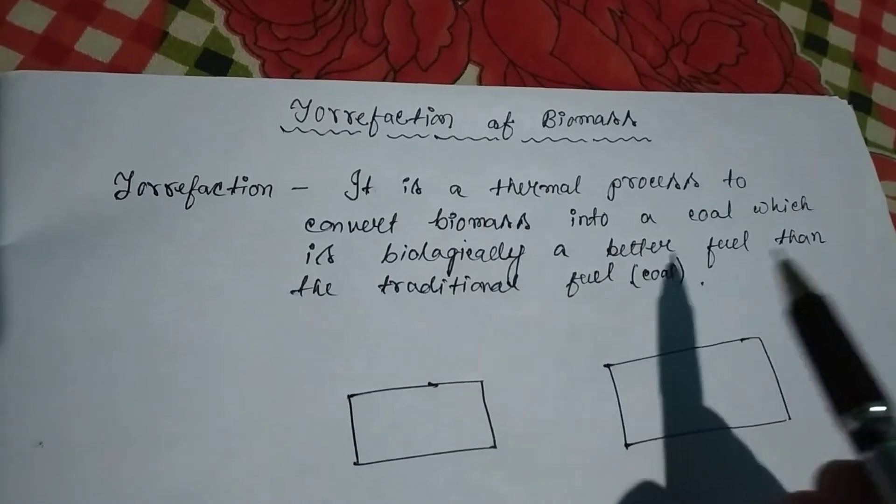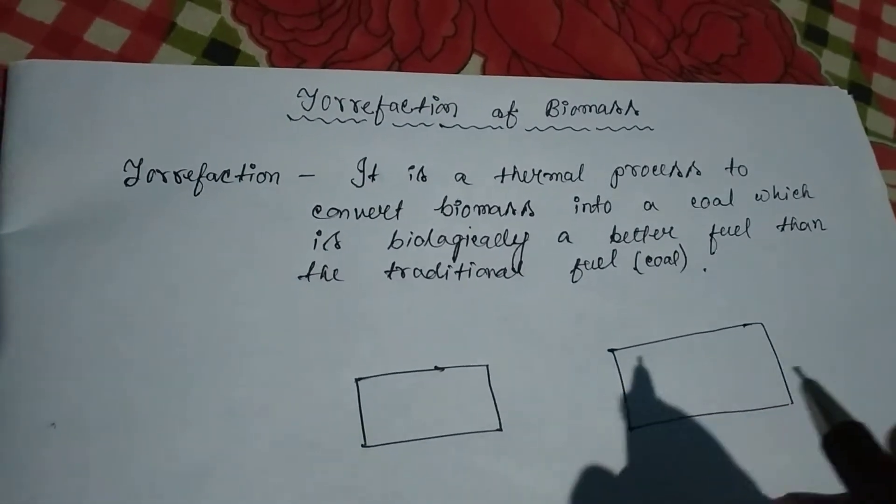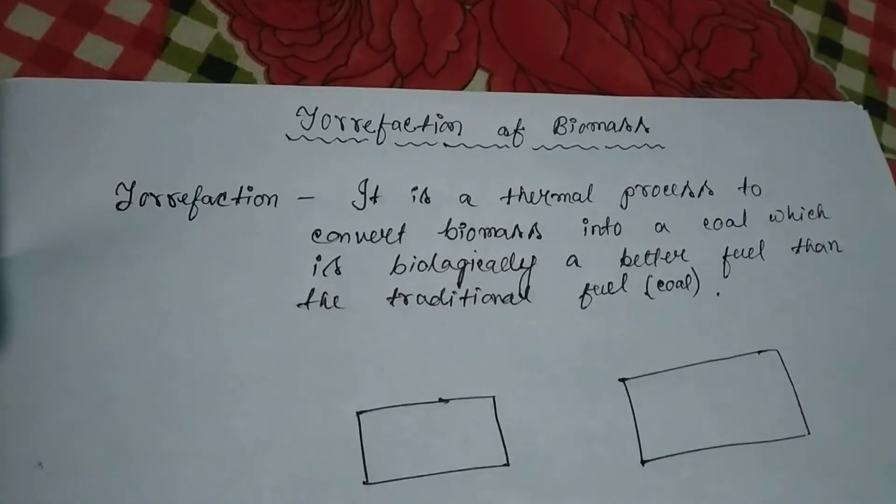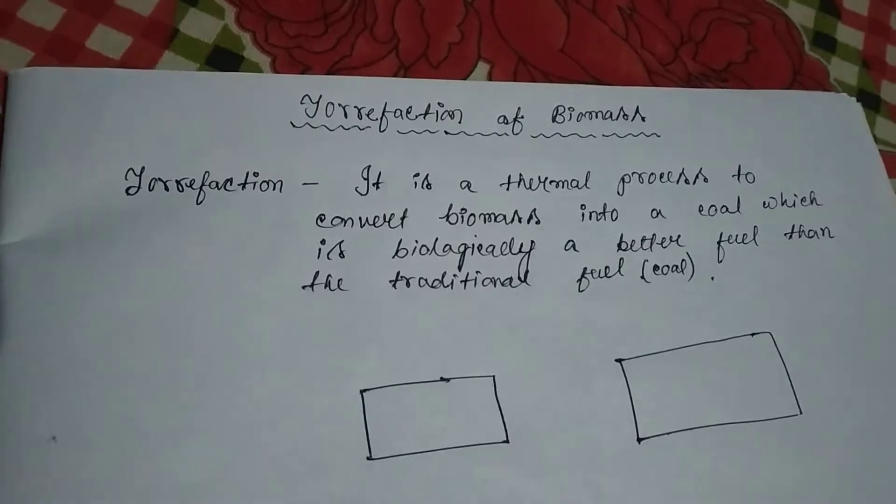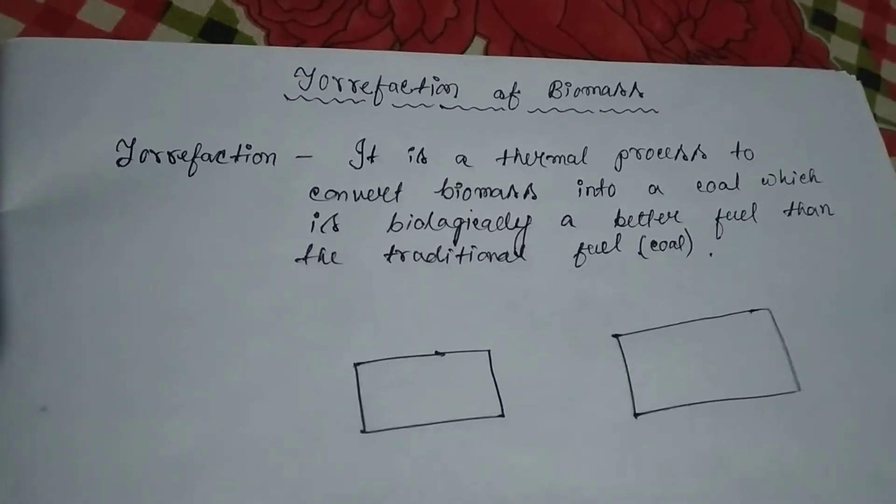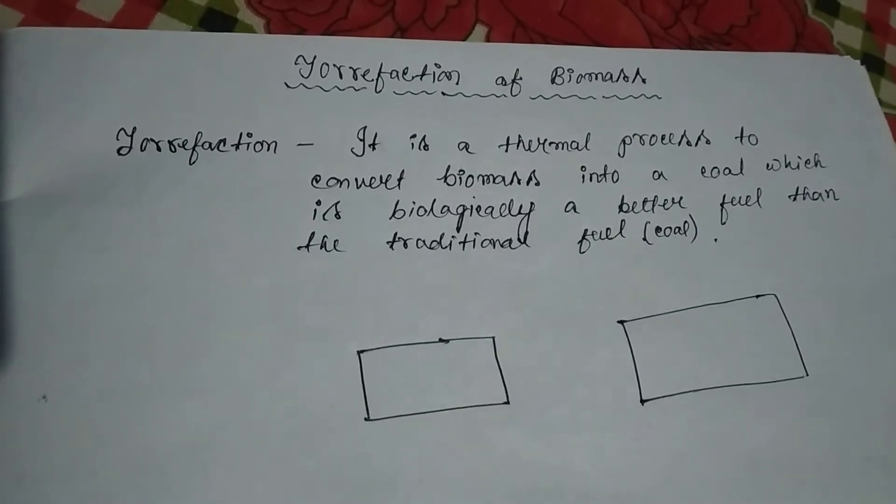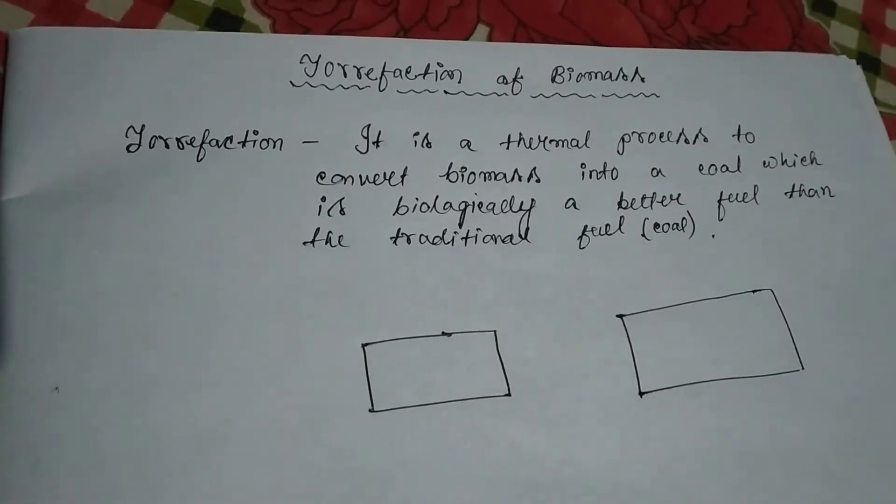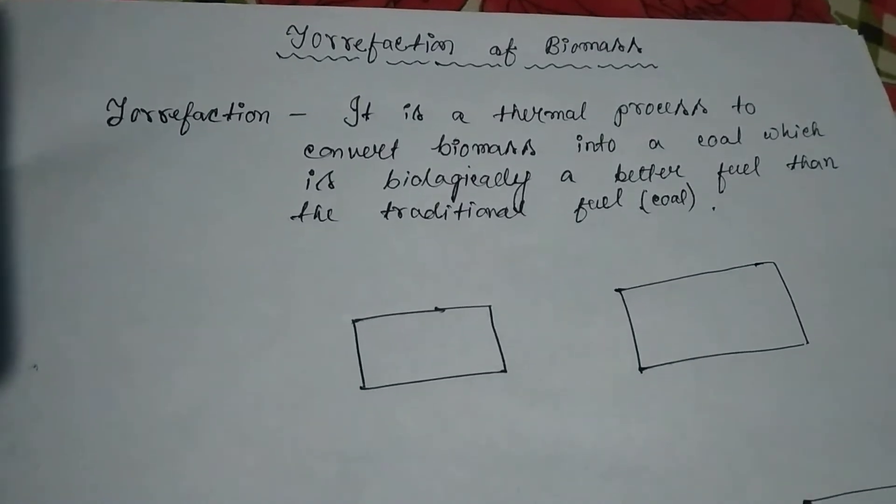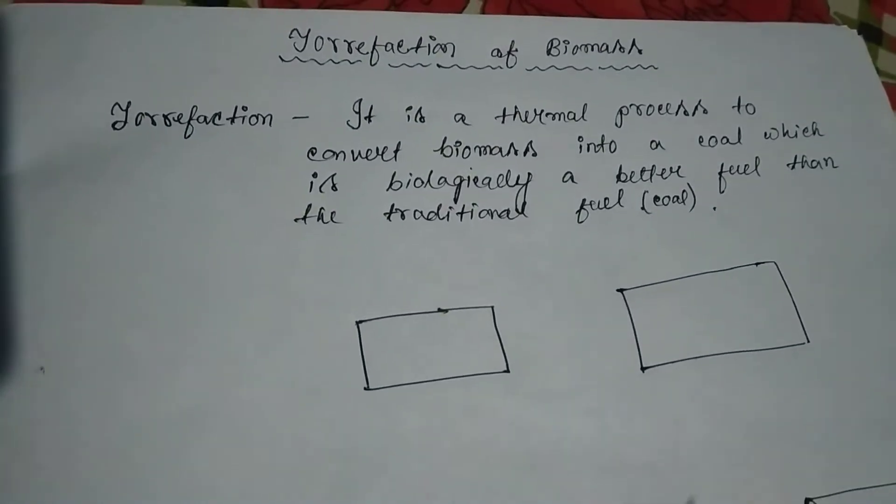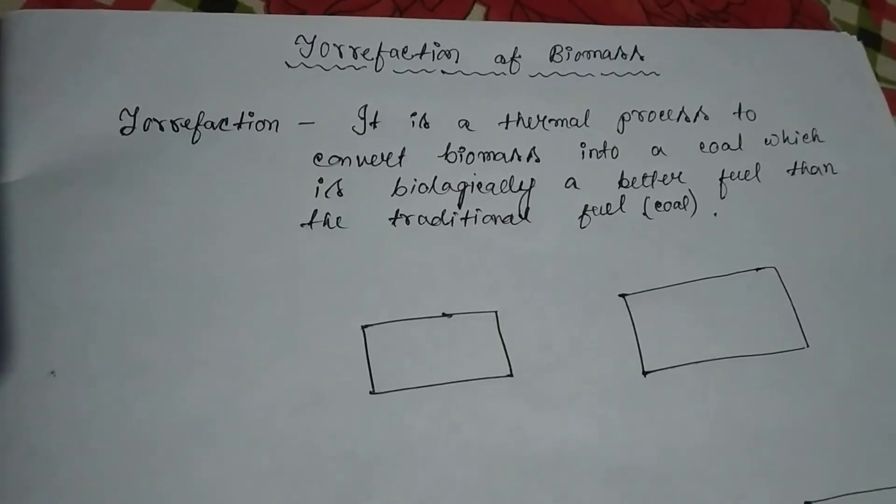We always get to know on the news that stubble burning in Haryana and Punjab causes pollution in Delhi city. It is very harsh because the stubble produced by farmers is easy to be burned at the field only, so they burn that stubble and don't think about the pollution.